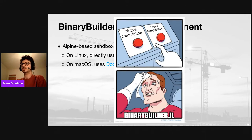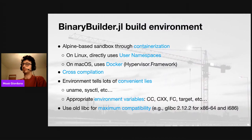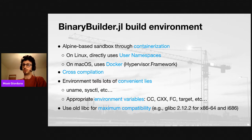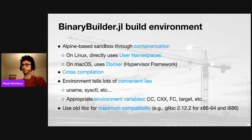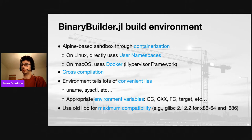BinaryBuilder is a cross-compiler whose environment tells a lot of convenient lies. For example, commands like uname and sysctl will all pretend to be the target system — not actually the host Alpine-based sandbox. We also set all environment variables like CC and CXX so that they point directly to the cross-compiler. For maximum compatibility, we use as old as possible C libraries — for example, on Linux with glibc, version 2.12 to support CentOS 6 systems.